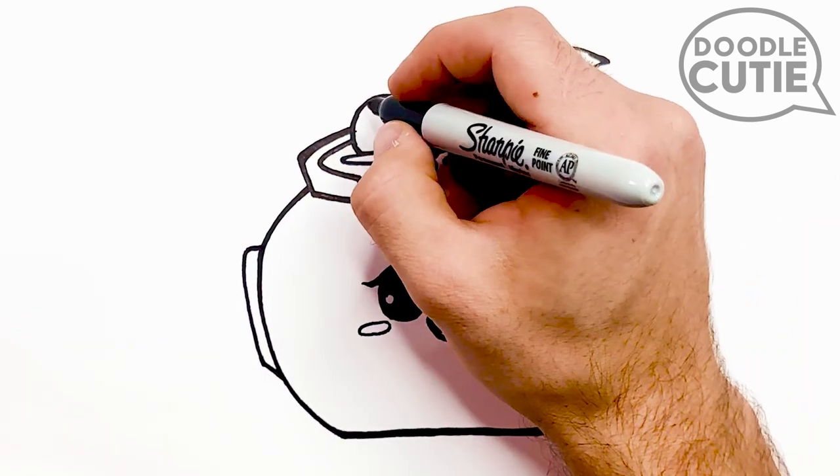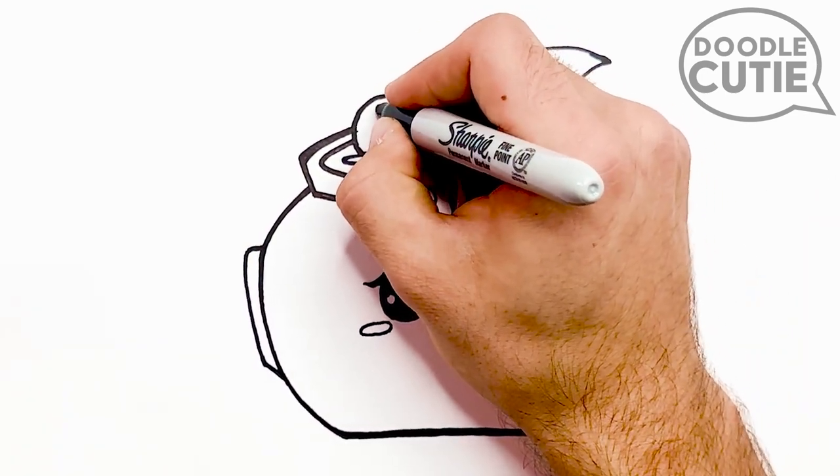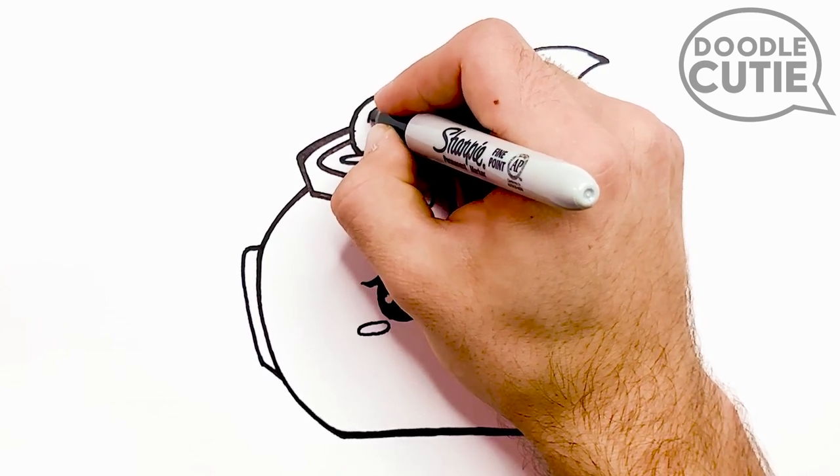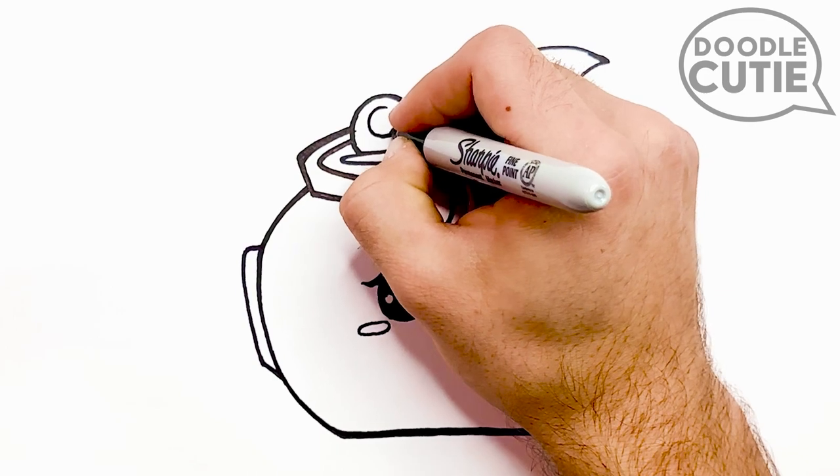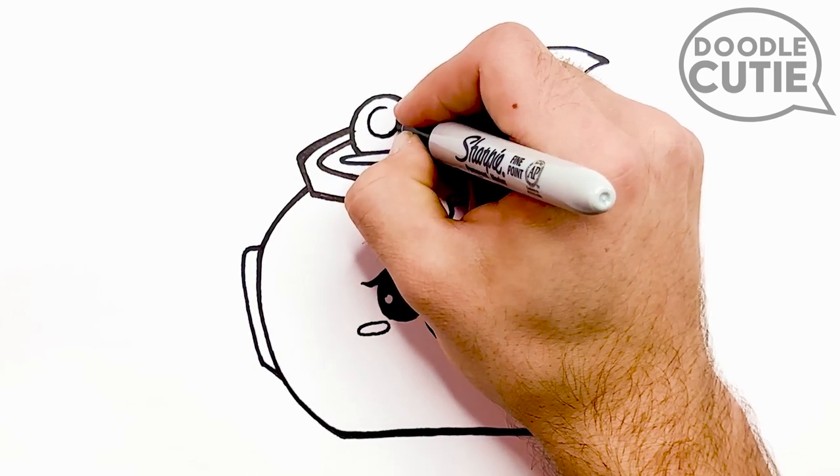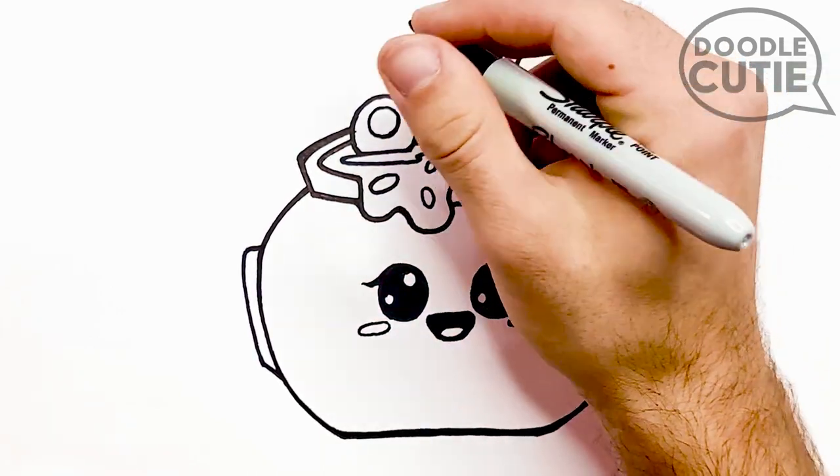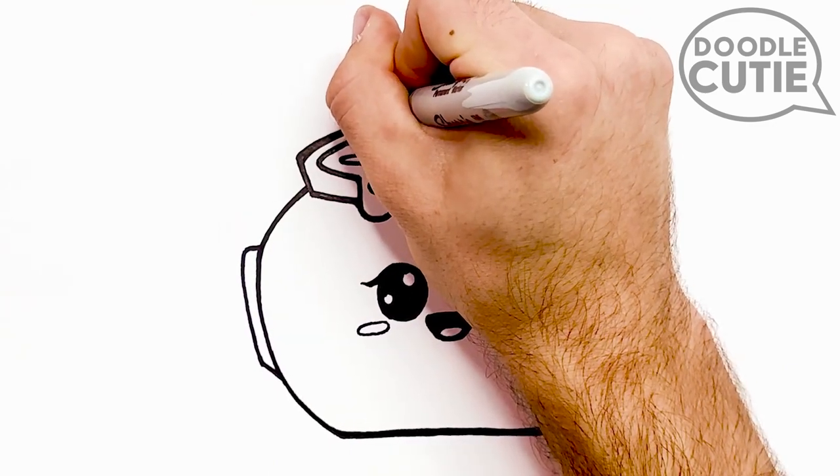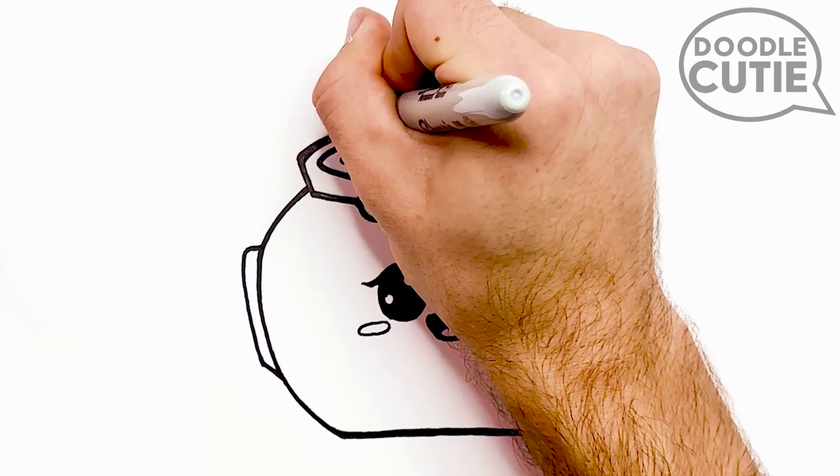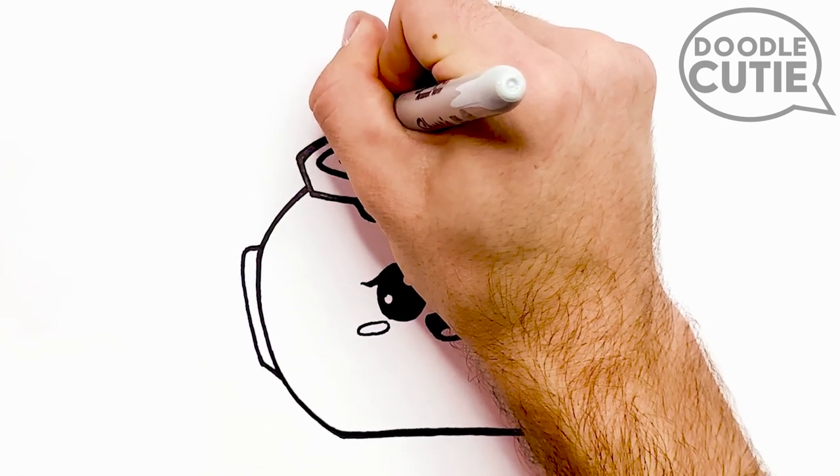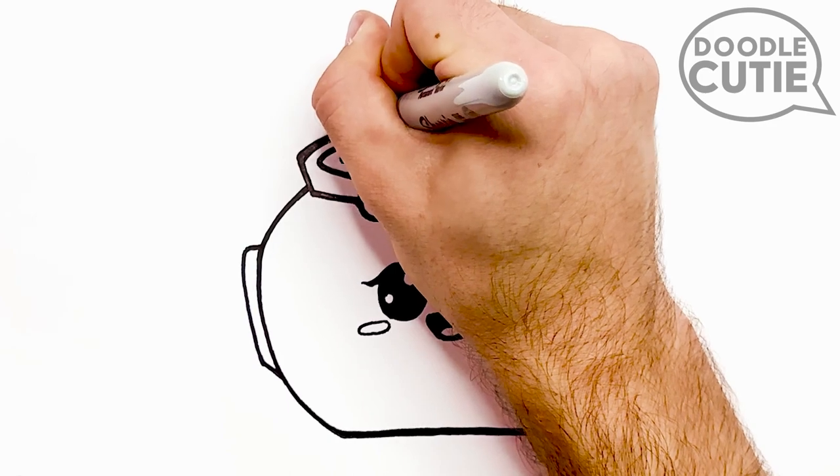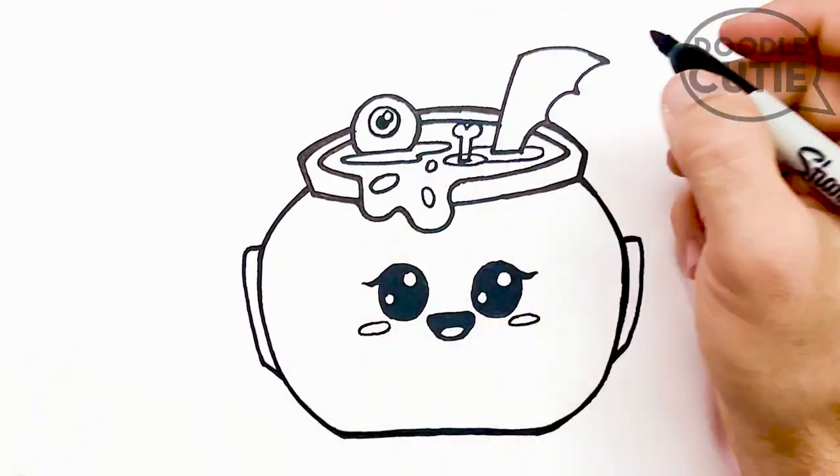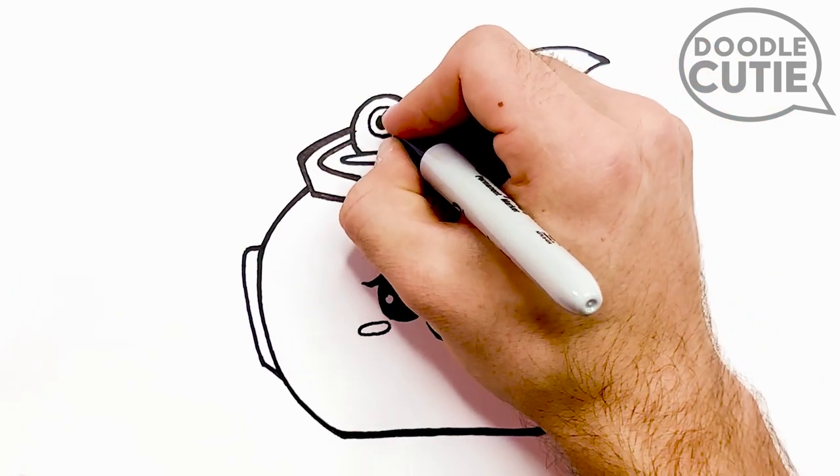Then I'm going to go back to that circle shape I made earlier and fill in some details. Because this is an eyeball. So I'm going to draw a circle inside the circle. And I'll draw another circle to the top right of that inner circle. And fill it in. And then on the innermost circle, I'll draw another one. And leave it white. Like this.